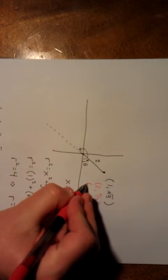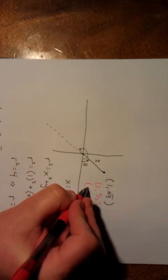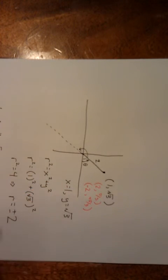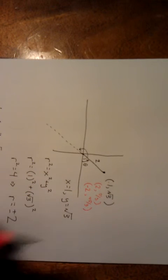If we rotate into quadrant 3, we'd be at an angle of 4 pi over 3, and if we walk negative 2 units, we would arrive at the point in Cartesian coordinates that we call 1, square root of 3.